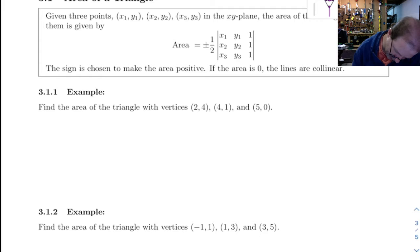So let's look at this first example. Find the area of the triangle with vertices (2, 4), (4, 1), and (5, 0). All right, so all you do is you put the x values, 2, 4, 5, then the y values, 4, 1, 0, and then a stack of ones.